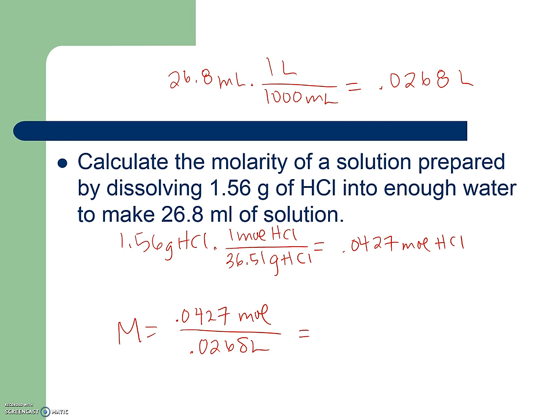0.0268 liters. I go ahead and divide. And I get 1.59M. And that's typically what you're going to see. You're going to see that m for molar. And not as much the moles per liter. We're just sort of expected to know that. There can be all sorts of answers for molarity, from decimal numbers to whole numbers. And so that's another thing to take into consideration.